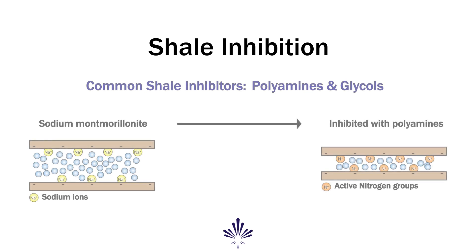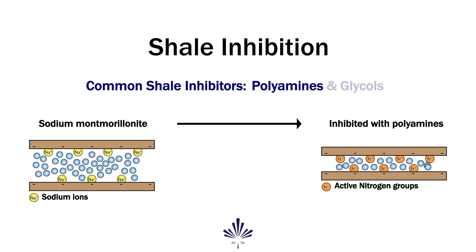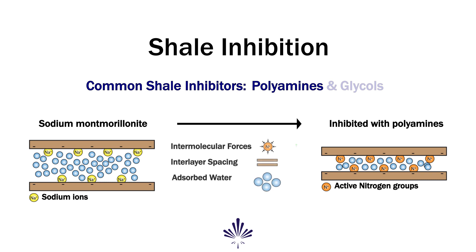Commonly used shale inhibitors are polyamines and glycols. Polyamines contain active nitrogen groups that interchange with cations located on the outer layers of clays. This strengthens the intermolecular forces between the clay layers and reduces the amount of water that can be adsorbed.